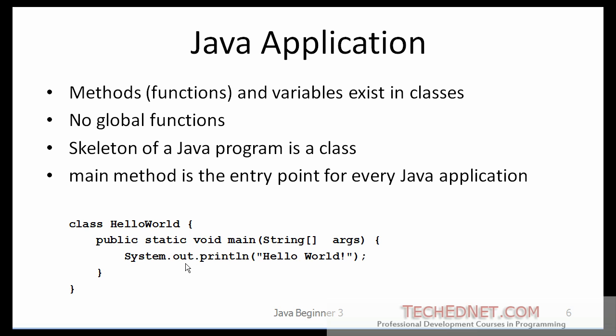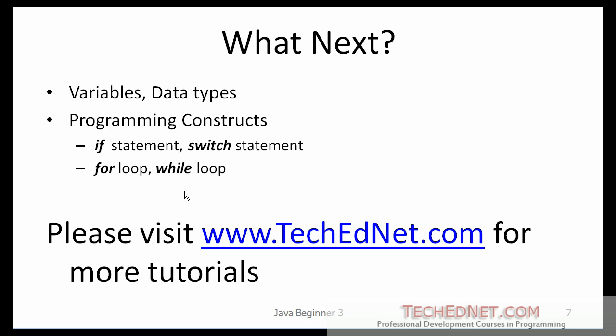I suggest you try this yourself. Once you can compile and run this application, you are ready to move on to the next chapter. In the next tutorial, I will cover variables and data types, then programming constructs: how to make decisions in Java using an if statement or a switch statement, and how to write loops — a for loop or a while loop — to execute a section of code more than once. Thank you.